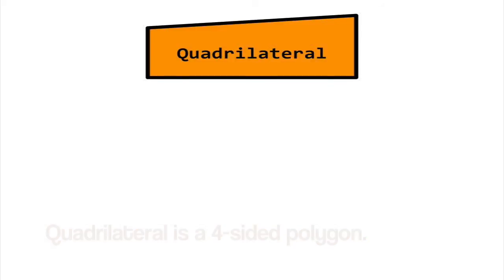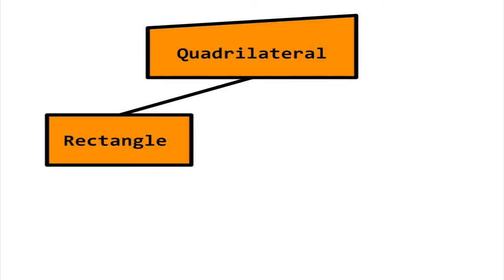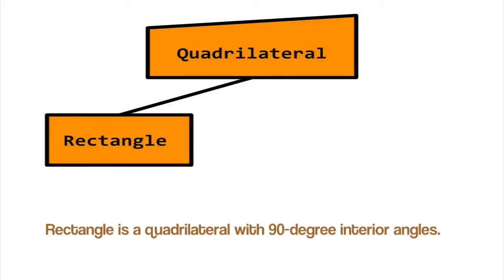To demonstrate inheritance, let's give the Quadrilateral class a child called Rectangle. Rectangle objects have all the attributes of Quadrilateral with one additional property. Rectangles not only have four sides, the interior angles must each be 90 degrees.